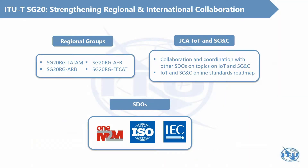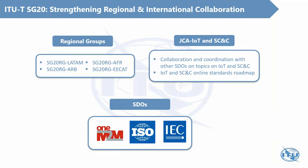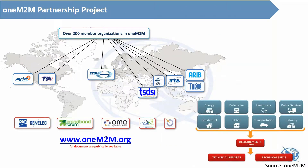With the leading role about IoT and smart cities in ITU-T, Study Group 20 is doing good in strengthening regional and international collaborations. We have four regional groups as well as the JCA IoT and smart city and community meetings. A good example of collaboration with international SDOs includes the collaboration with oneM2M, ISO and IEC. Today, with this chance, I would like to introduce the progress about the collaboration between ITU-T Study Group 20 and oneM2M.